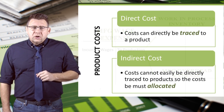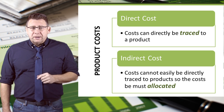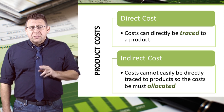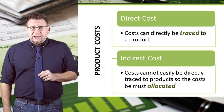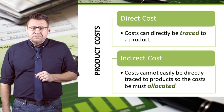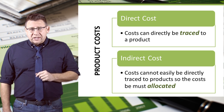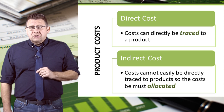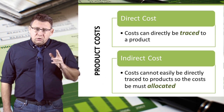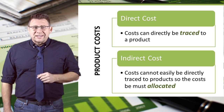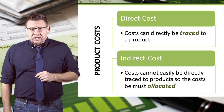You recall that direct costs, like direct labor, are those that can be traced directly to the product. Indirect costs are those that cannot be traced directly to the product, so those costs need to be allocated to products.